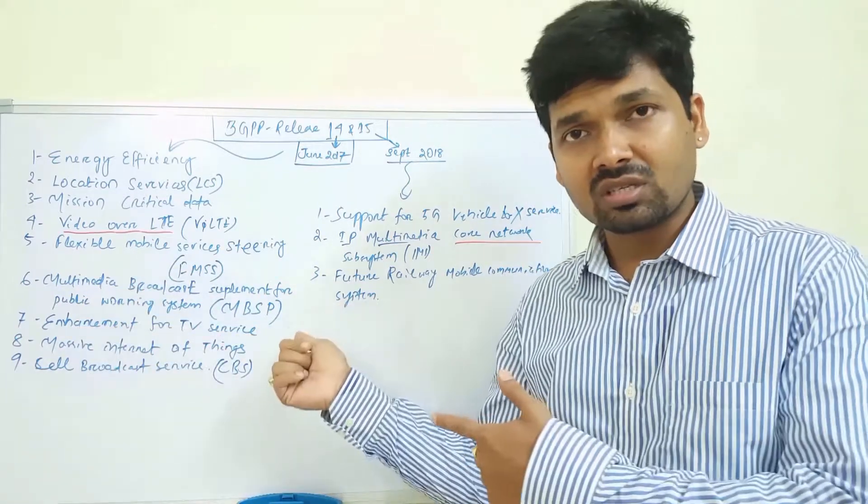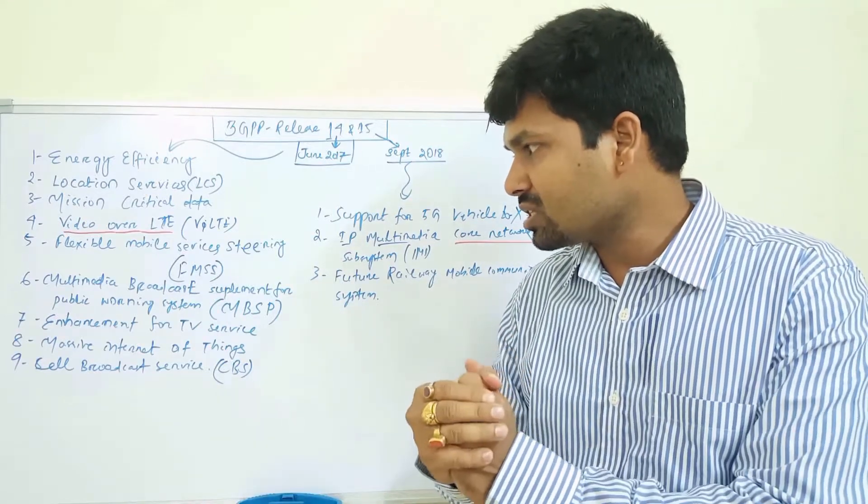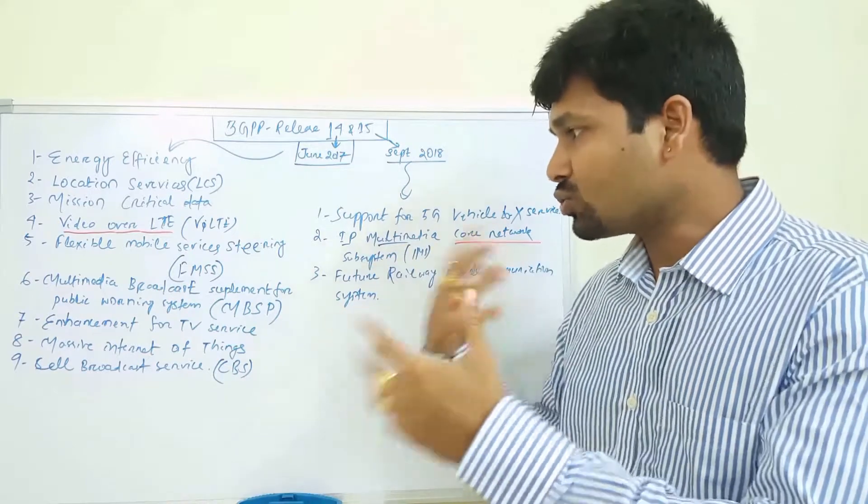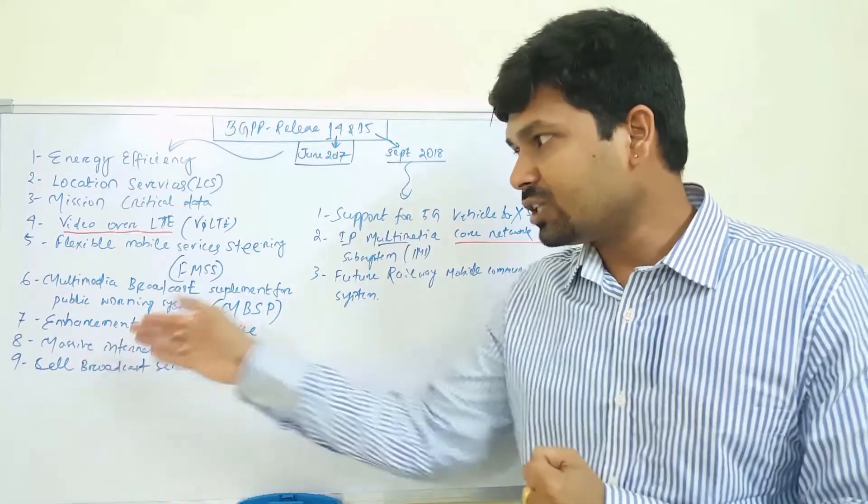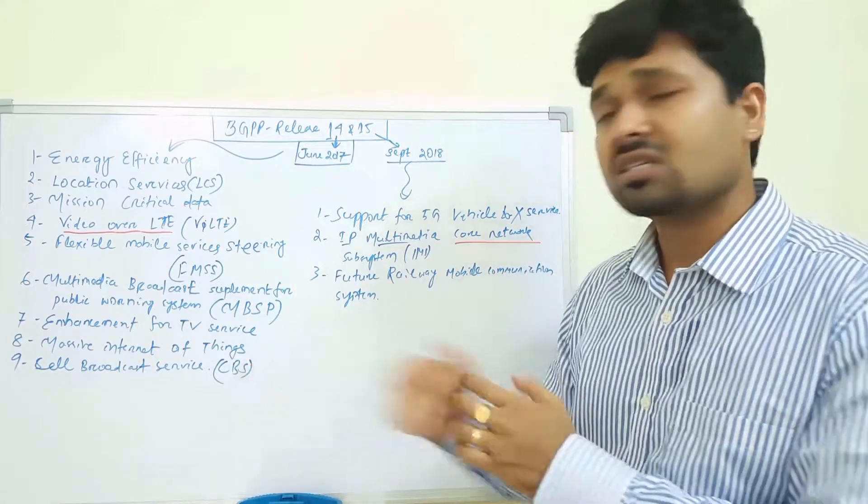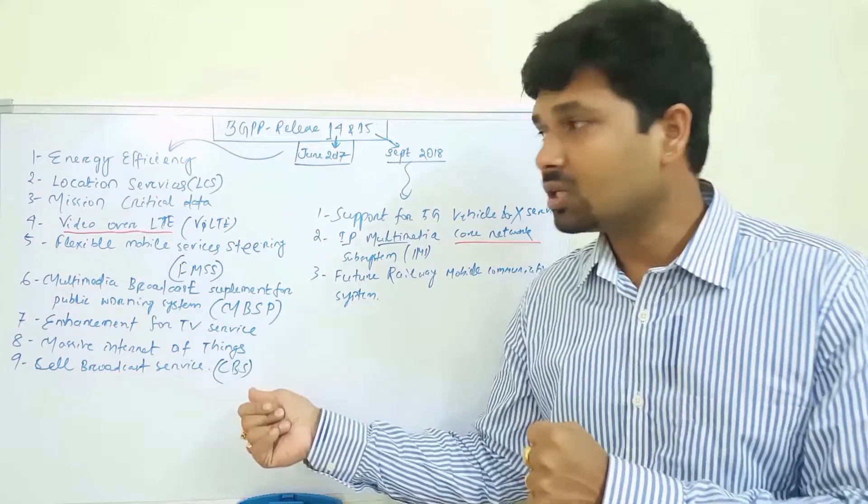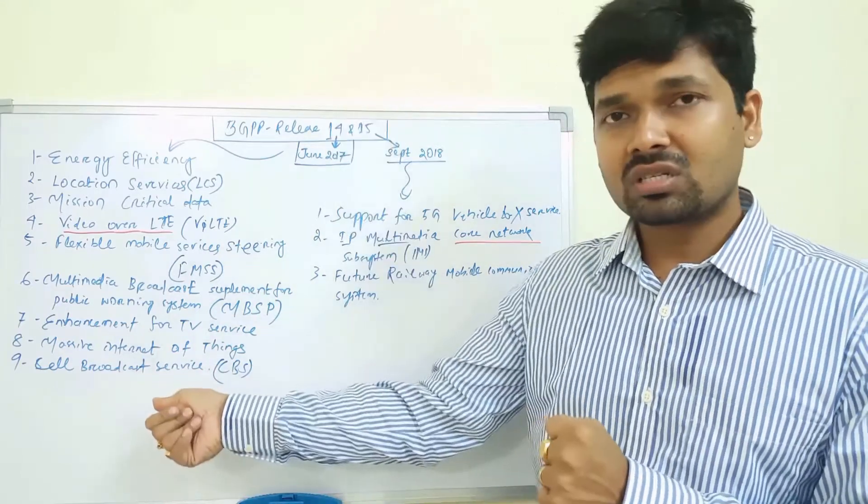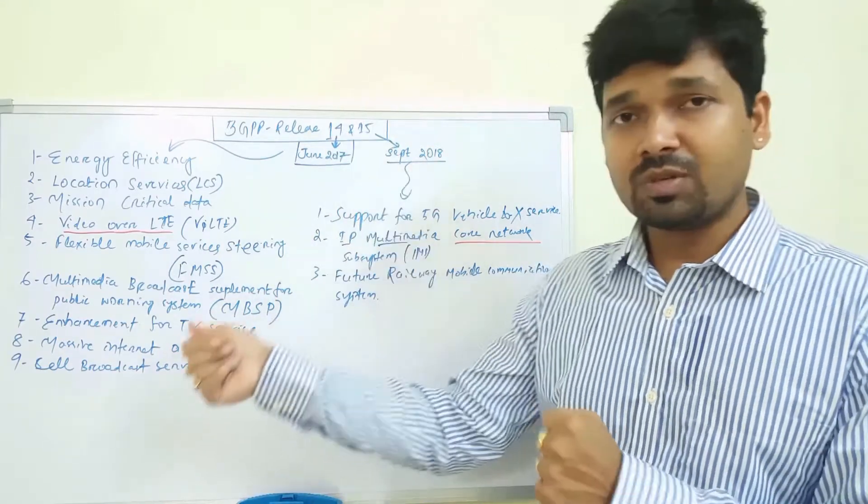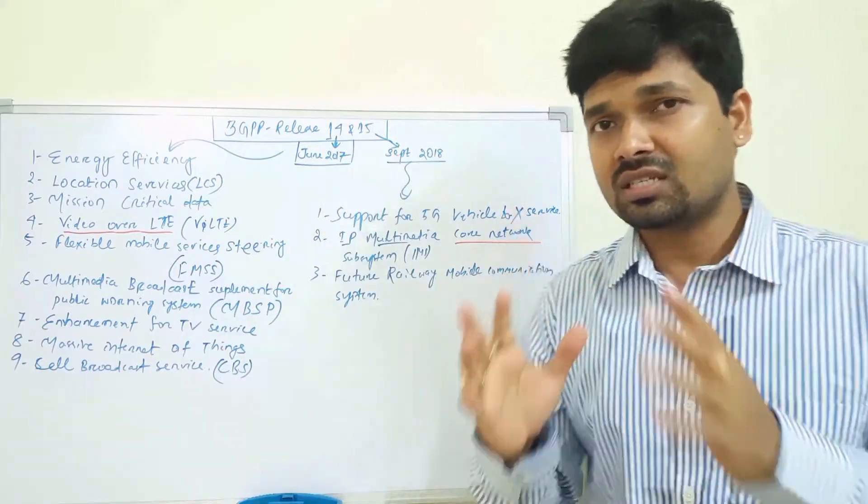Then the next, the seventh point, is the enhancement for TV services - television services. So hopefully we're seeing this online TV in a different, altogether different manner. The eighth point is massive Internet of Things, and the last but not the least, Cell-Broadcast Service or CBS.